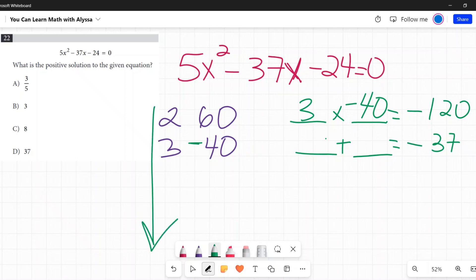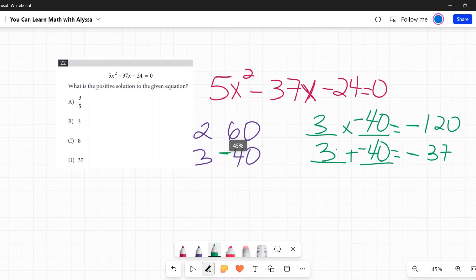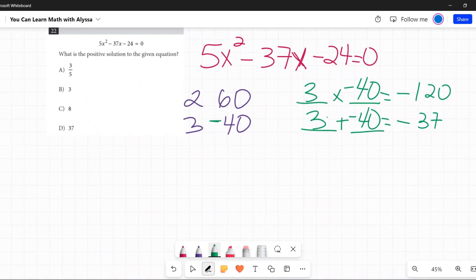So yeah, you don't have to write out all the possible things that go into it. You just want to be testing as you go so that you don't have to do more work than you have to in these tests where there's a time pressure. Right, so now I know 3 and negative 40 are my two.